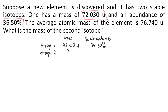For isotope 2, although it's not given in the problem, you can solve for its percent abundance. Since the abundance of isotope 1 is 36.50%, the abundance of isotope 2 is 100% minus 36.50%, which gives 63.50%.